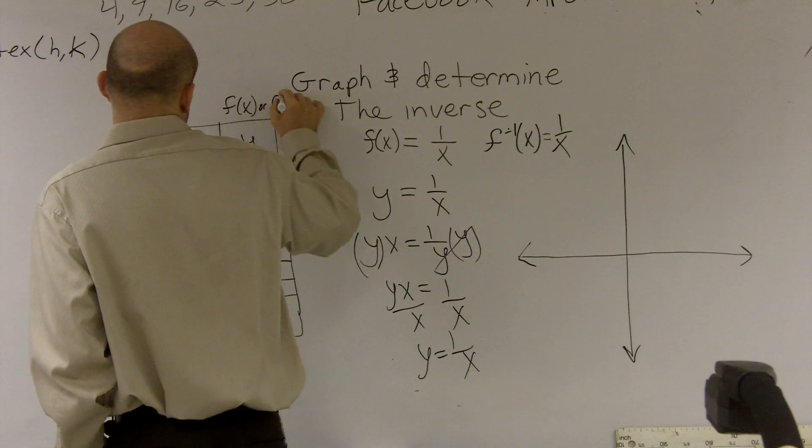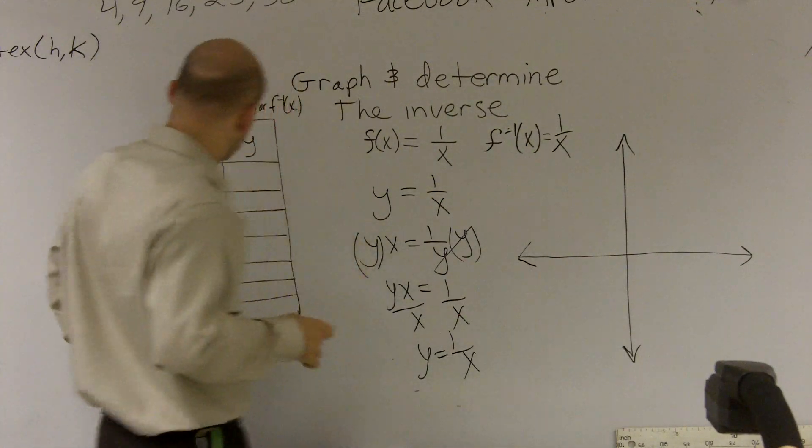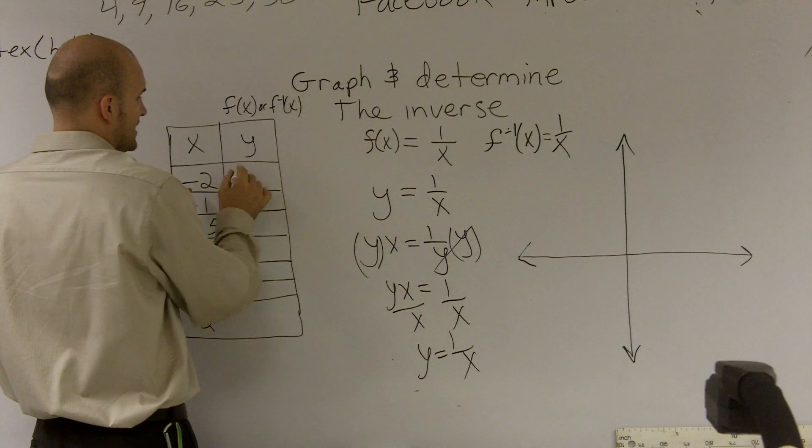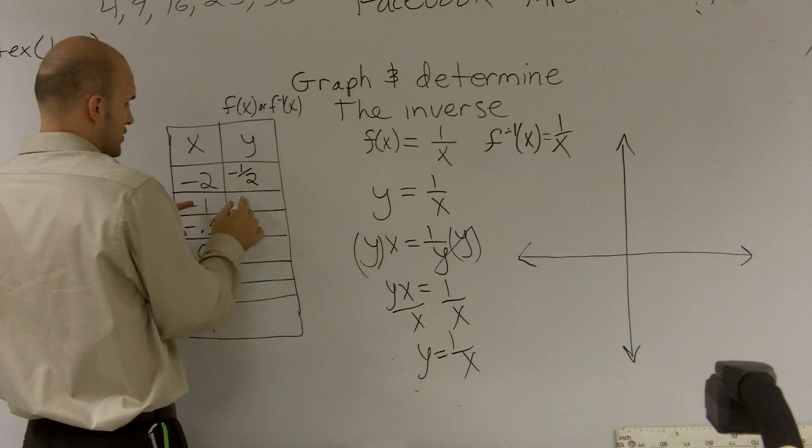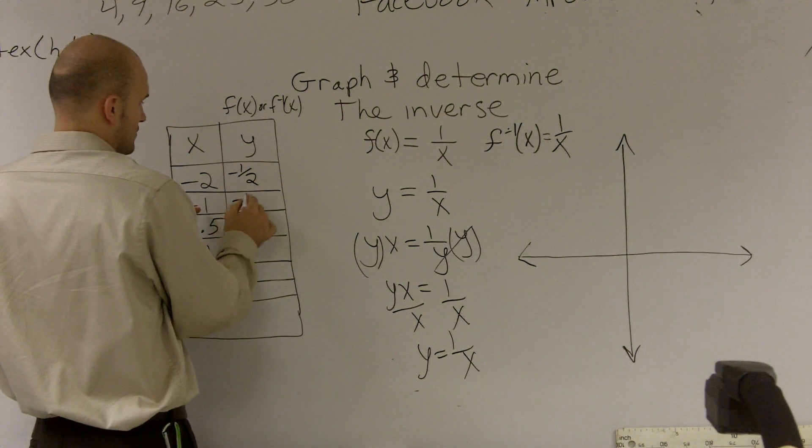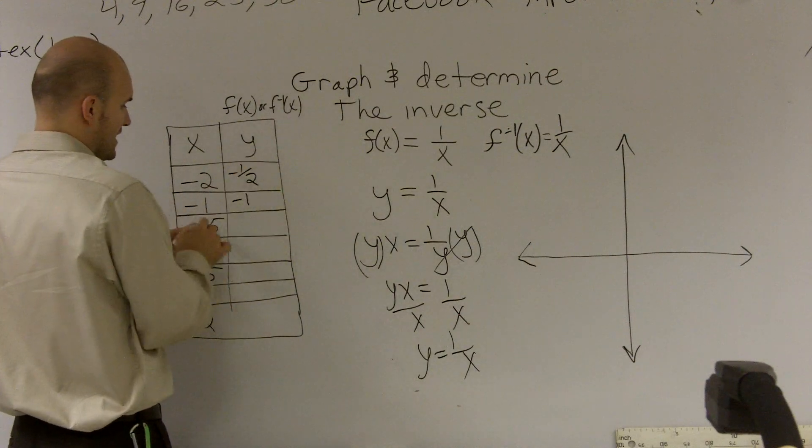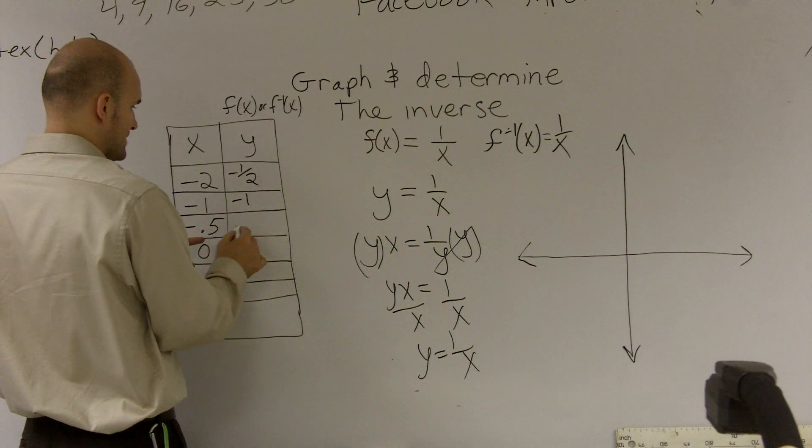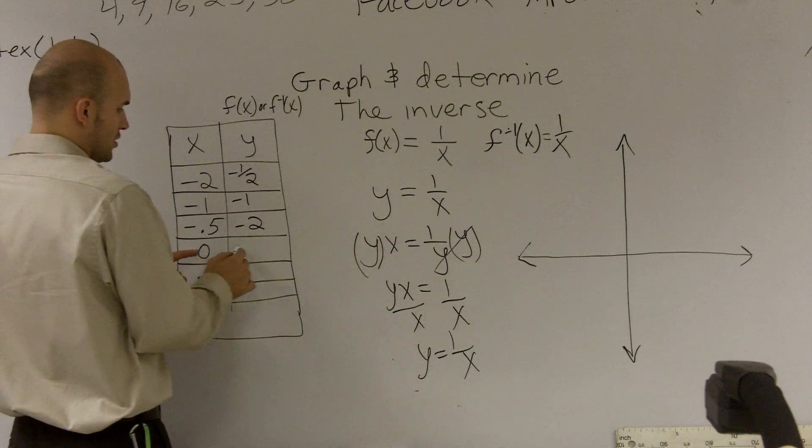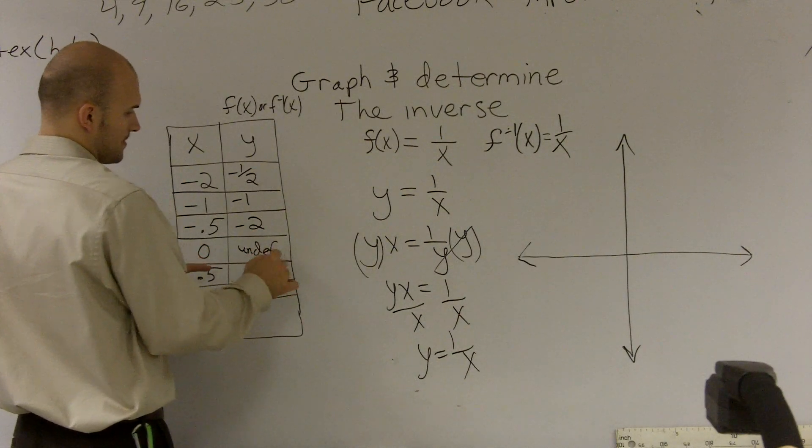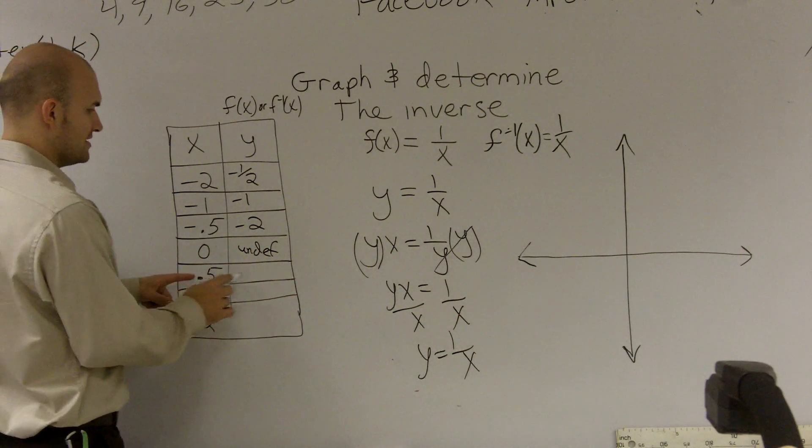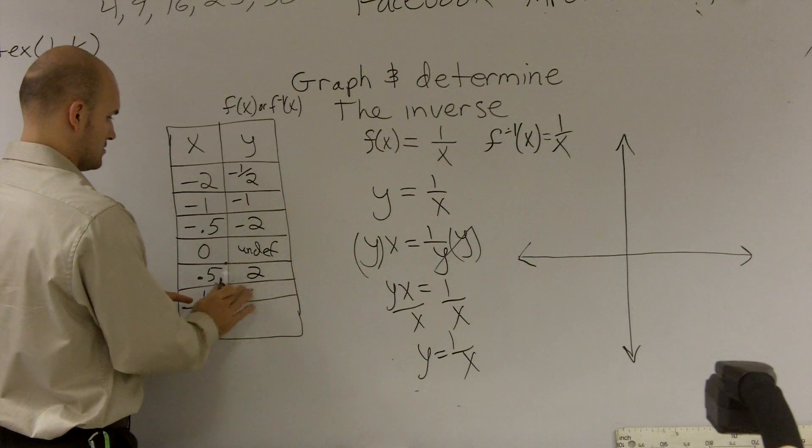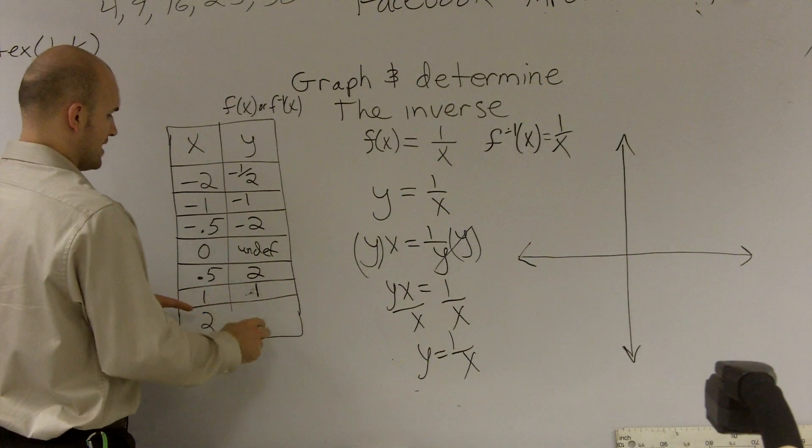So I could also use f of x too, or it's f inverse of x because they're the exact same. So negative 2, 1 over negative 2 is a negative 1 half. Negative 1 over 1 is a negative 1. 1 over negative 1 half is going to be a negative 2. 0 is undefined. This is becoming a 2. This is a 1. And this is 1 half.